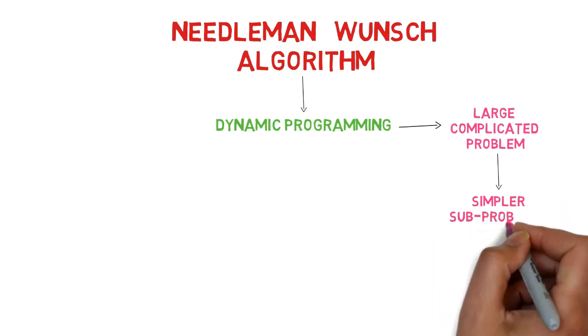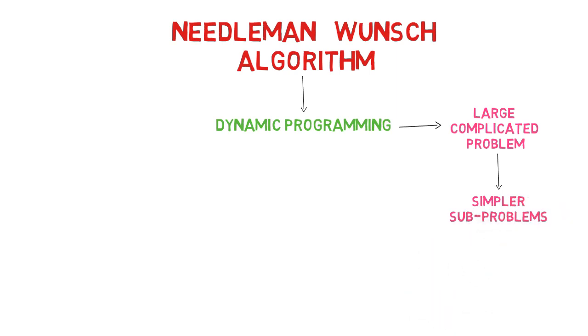Needleman-Wunsch algorithm is one of the important algorithms that uses dynamic programming to solve alignment problems. In dynamic programming, we take a larger, complicated problem and break it down into smaller, simpler sub-problems so that it is easy to solve. Then, derive the optimal solution from the solution of those problems.